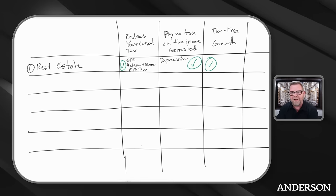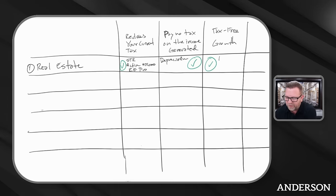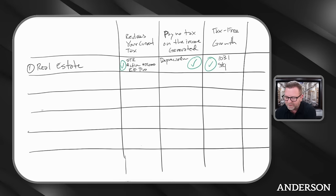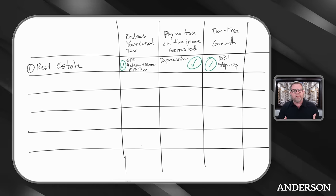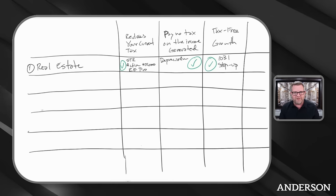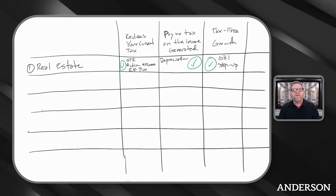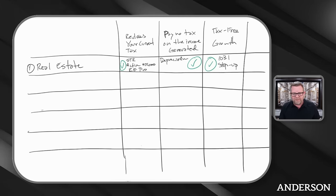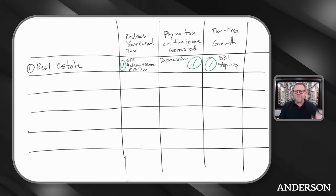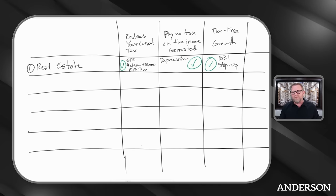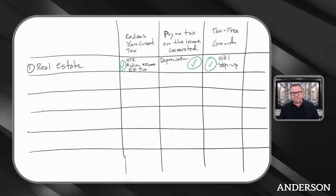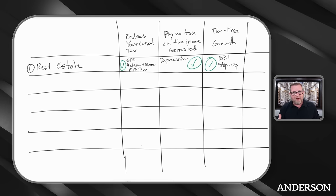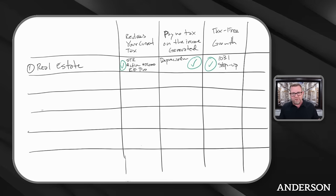How about tax-free growth? I'm going to give this one a checkmark too. We can do what's called a 1031 exchange and we get a step up in basis when we pass. I can buy properties, let's say three houses for $200,000 each. Let's say over the years, those properties go up in value to $400,000 each.